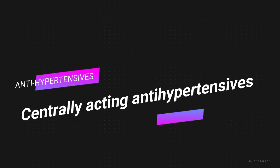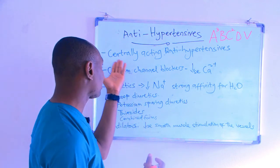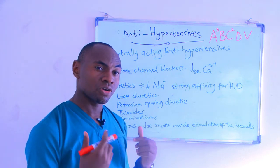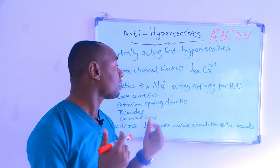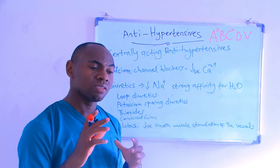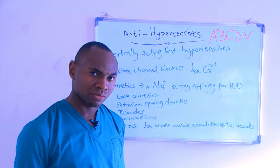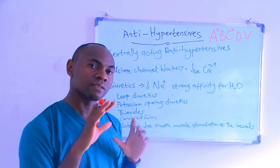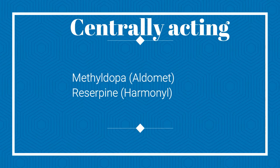The first C stands for centrally acting antihypertensives. These are antihypertensives that act on the central nervous system. They work by decreasing adrenergic outflow from the CNS, most specifically at the brain. These drugs go directly to the central nervous system, block adrenergic outflow that would otherwise stimulate the heart, and thereby decrease blood pressure.